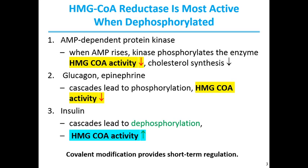Short-term regulation of cholesterol biosynthesis is accomplished by phosphorylating HMG-CoA reductase, catalyzed by AMP-dependent protein kinase. When ATP levels are down and AMP levels rise, AMP-dependent protein kinase phosphorylates HMG-CoA reductase, inactivating it, and as a result cholesterol synthesis goes down. The hormones glucagon and epinephrine also activate AMP-dependent protein kinase, phosphorylating HMG-CoA reductase and reducing its activity. In the presence of insulin, HMG-CoA reductase is dephosphorylated, its activity increases, leading to production of mevalonate.